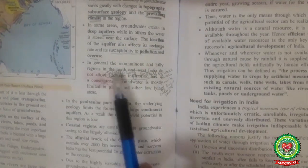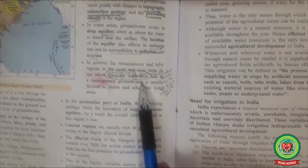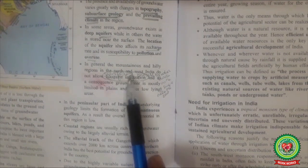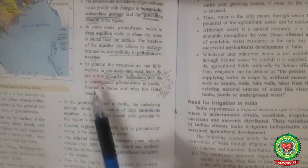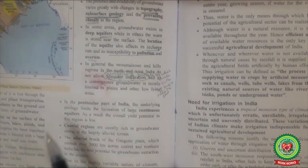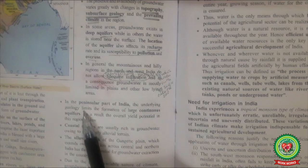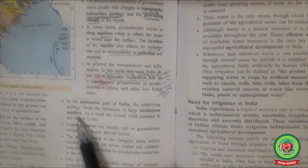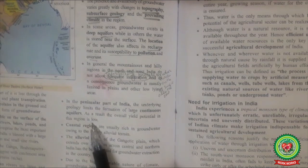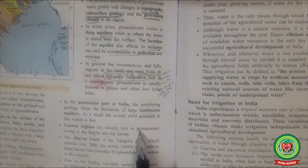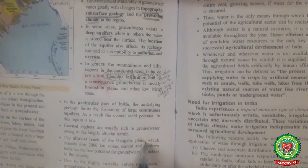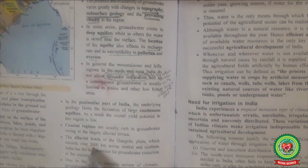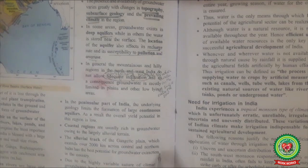In general, mountainous and hilly regions in north and west India do not allow adequate infiltration — the process by which water on the surface enters the soil. As a consequence, groundwater is mostly limited to the plains and other low-lying areas. In the Peninsular part of India, the underlying geology limits the formation of large continental aquifers, so overall yield potential in this region is low. Coastal regions are usually rich in groundwater due to largely alluvial tracts. The alluvial tracts of the Gangetic Plains, extending over 2,000 km across central and northern India, have the best potential for groundwater extraction in the country.